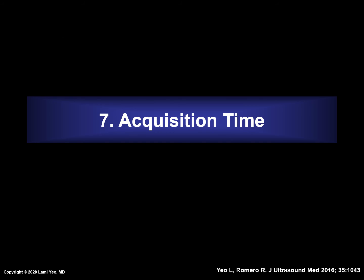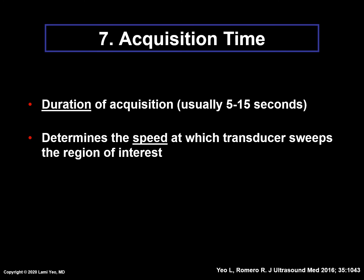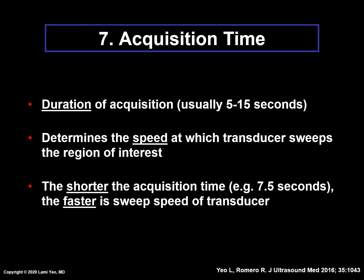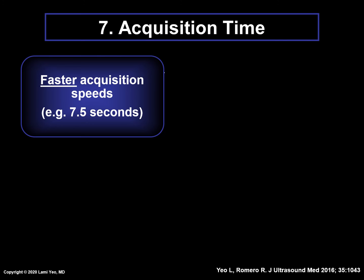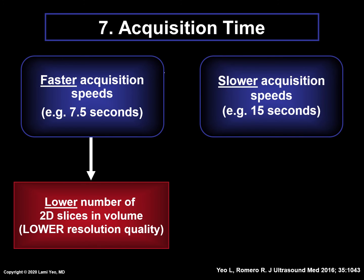Now let's review the acquisition time. This is defined as the duration of acquisition and usually ranges from 5 to 15 seconds. The acquisition time essentially determines the speed at which the ultrasound transducer sweeps the region of interest. The shorter the acquisition time — for example, 7.5 seconds — the faster the acquisition speed of the transducer. This may seem advantageous. However, because the acquisition speed is faster, there will be a lower number of two-dimensional slices contained within the STIC volume, resulting in lower resolution quality. So it seems that one should set a longer acquisition time, such as 15 seconds, which means a slower acquisition speed.